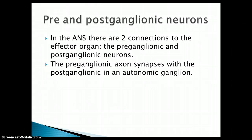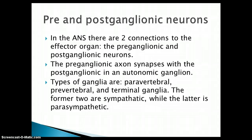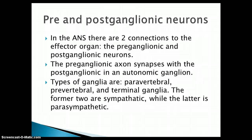The preganglionic axon synapses with the postganglionic axon in an autonomic ganglion outside of the central nervous system. The types of ganglia are paravertebral — these are in the sympathetic trunk on your spine, for the sympathetic nervous system. Other sympathetic nervous system ganglia are called prevertebral ganglia instead of paravertebral. And then there's the terminal ganglia, which are for the parasympathetic nervous system.